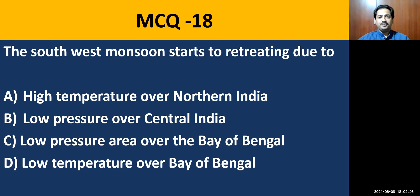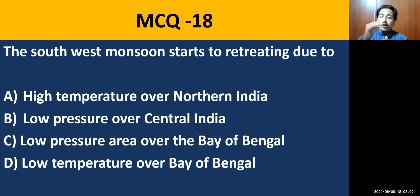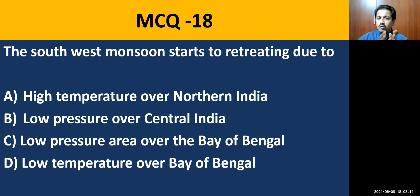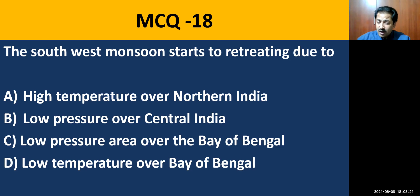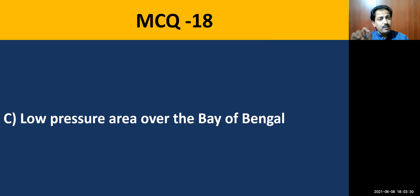MCQ question number eighteen: the southwest monsoon starts retreating due to — options are high temperature over northern India, low pressure over central India, low pressure over Bay of Bengal, or low temperature over Bay of Bengal. The clue is that winds always move from high pressure to low pressure area. Because there is low pressure over Bay of Bengal during October and November, winds start retreating towards Bay of Bengal. The correct option is low pressure over Bay of Bengal.